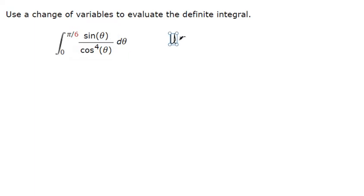There's really no one-size-fits-all method where you can always get the right substitution. Sometimes you just have to guess. So my guess is that cosine theta is going to be u.